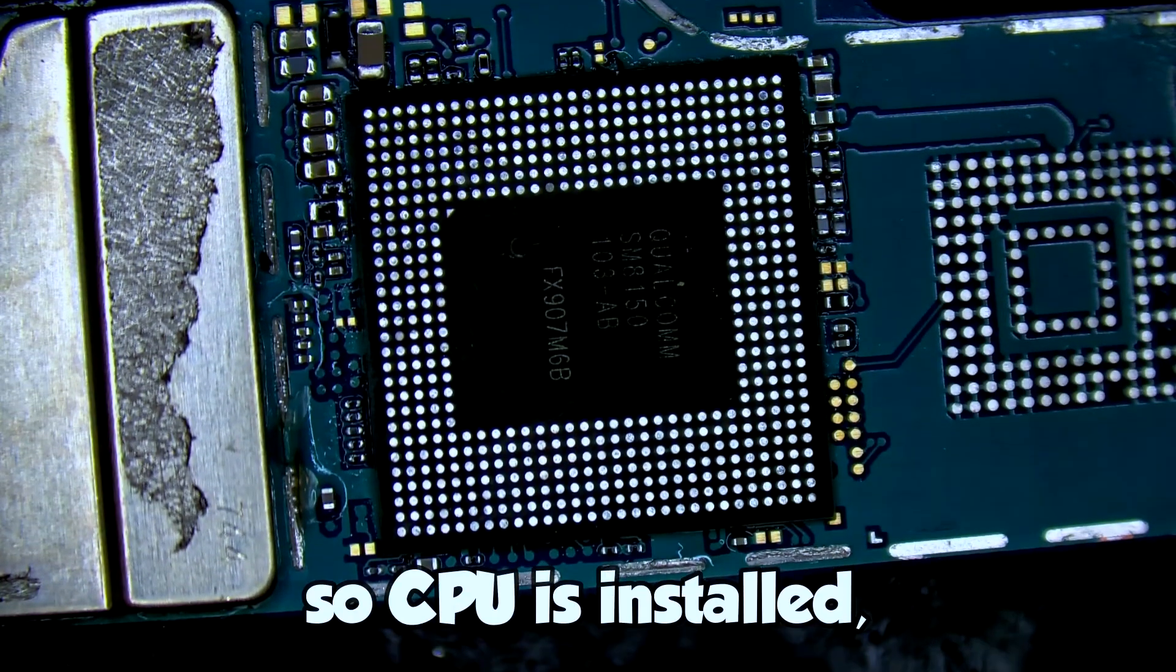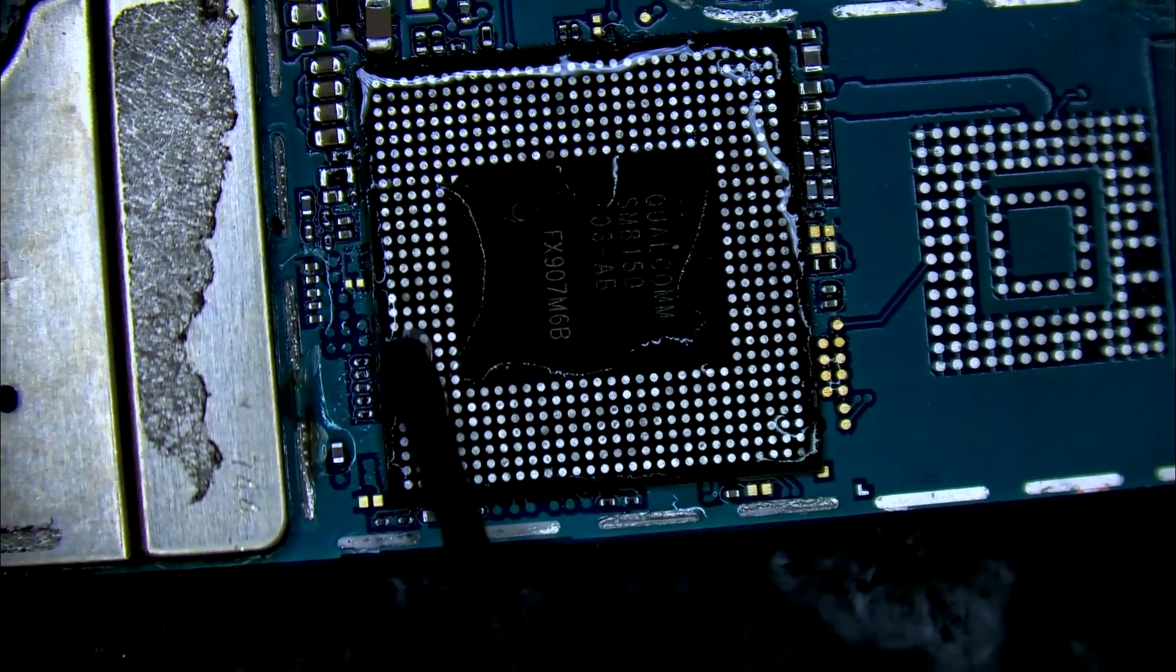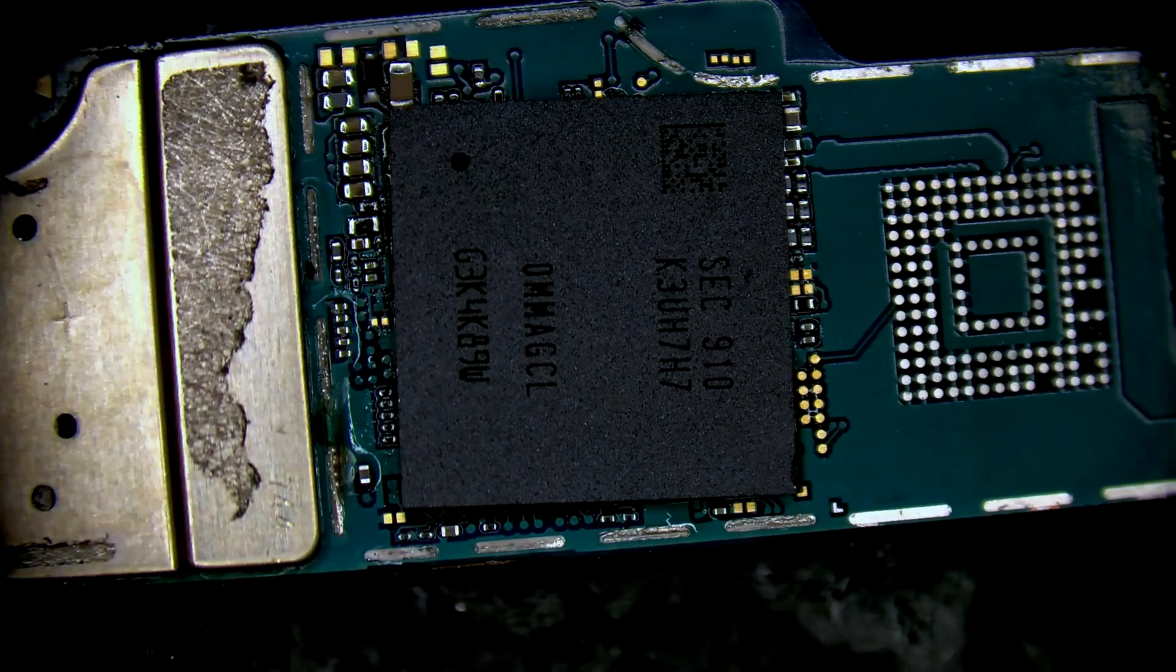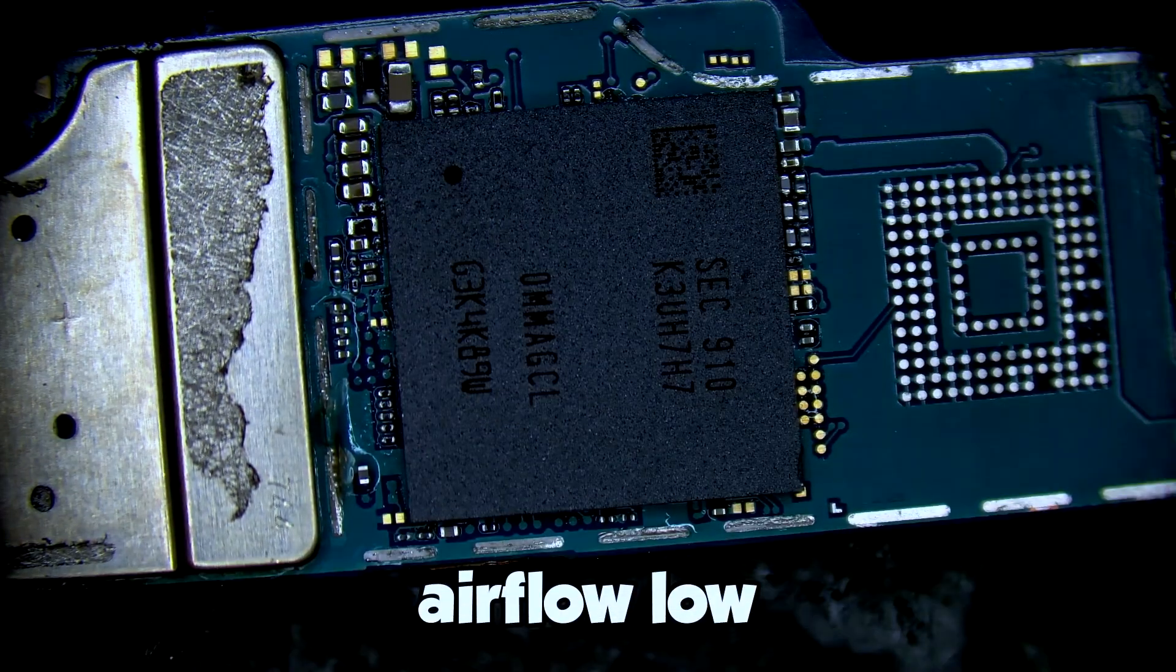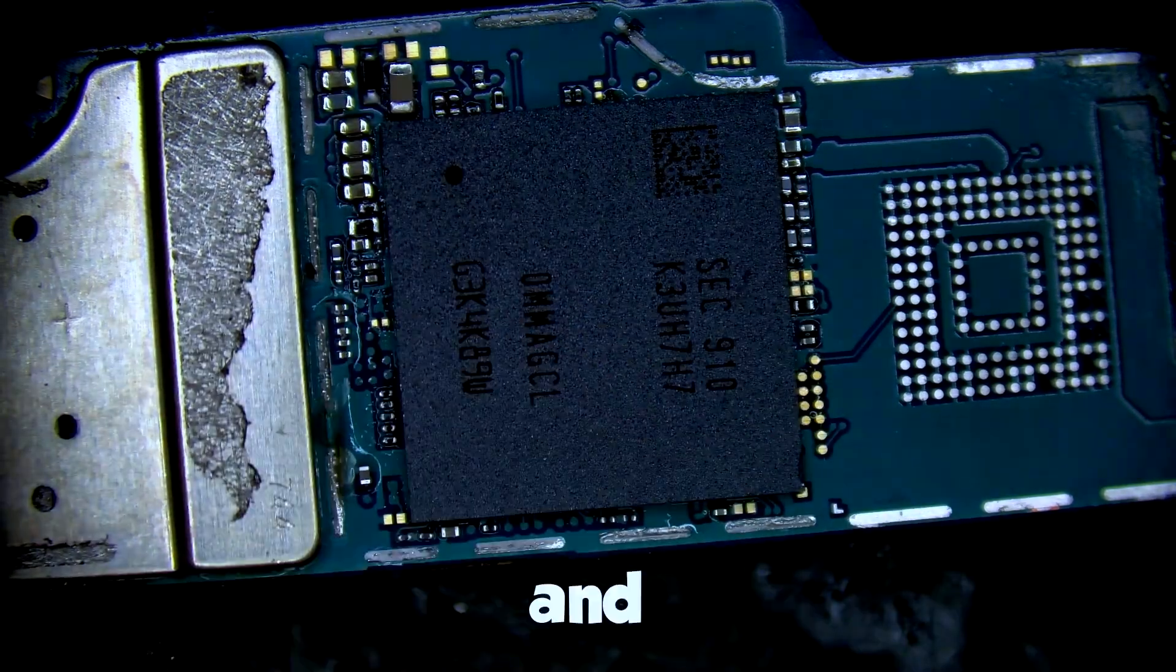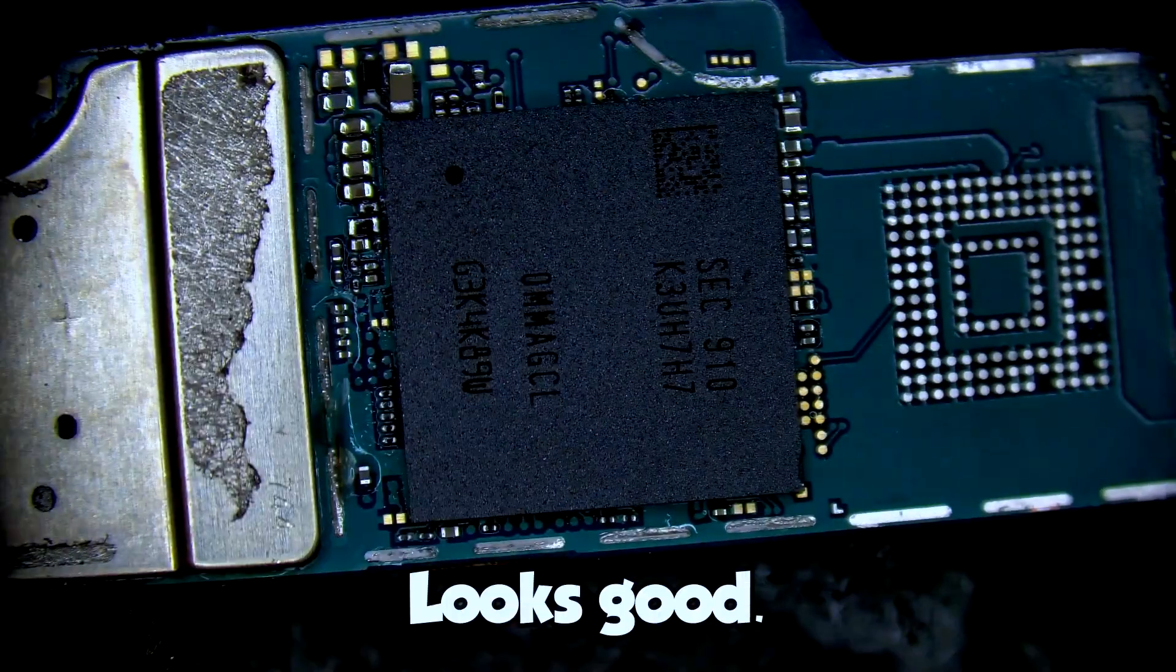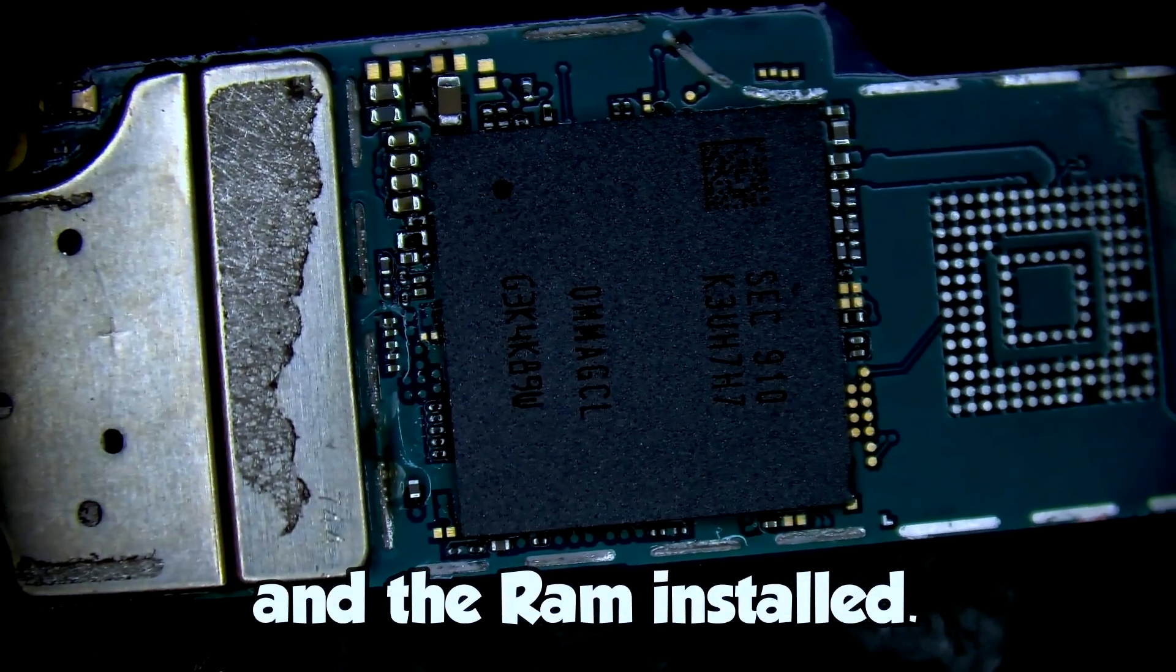Alright, so CPU is installed. Now we'll install the RAM. Align the RAM. Make sure it's perfectly lined up with CPU. And we'll start with airflow low again. And increase airflow to complete the installation. Looks good. Alright, we have the CPU and the RAM installed.